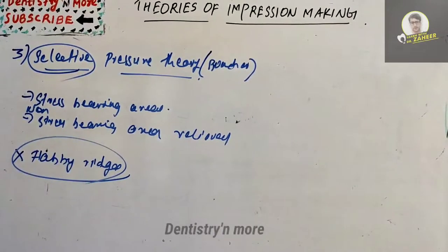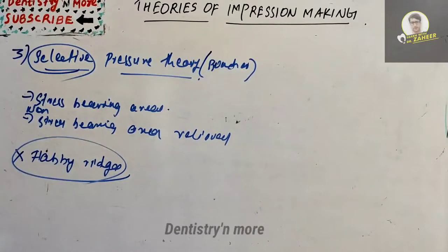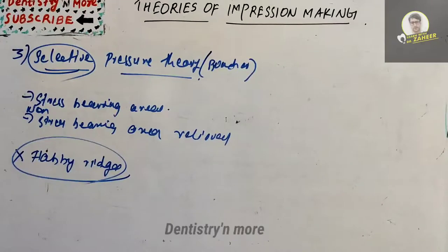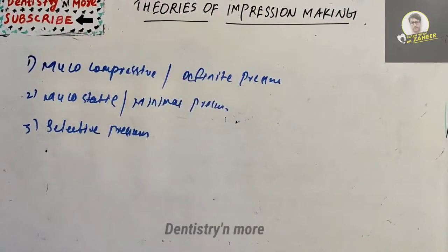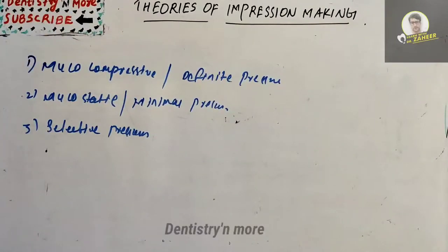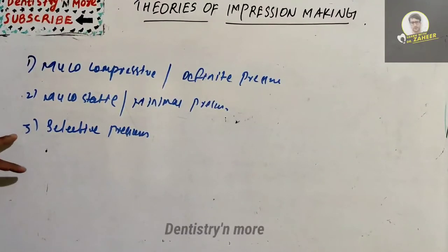These are the three main theories of impression making: mucocompressive or definitive pressure theory, mucostatic or minimal pressure theory, and selective pressure theory. Any one of these theories can be asked as a short note or short essay. We will come up with a new topic in prosthodontics.